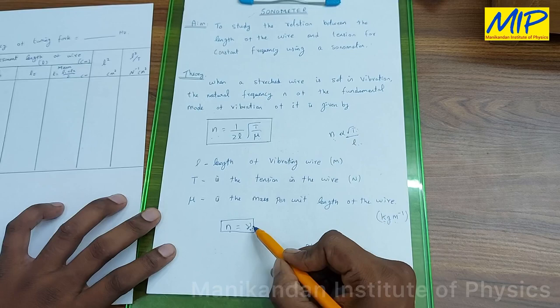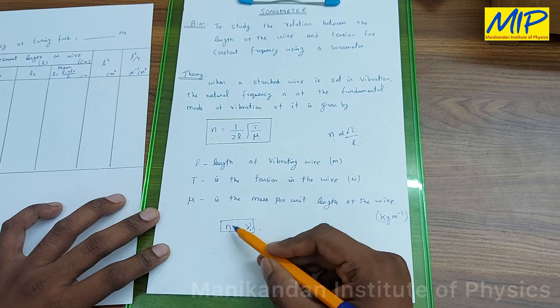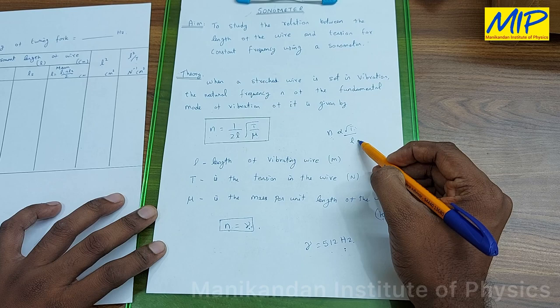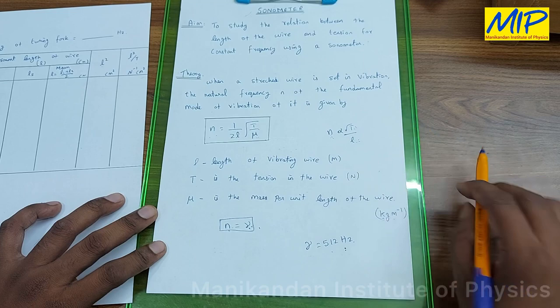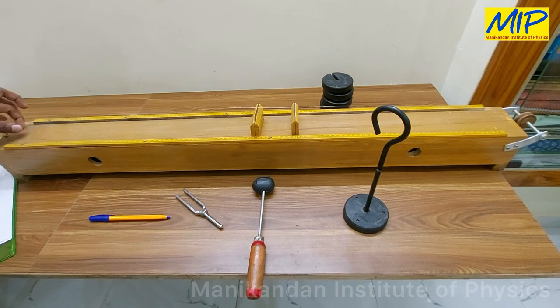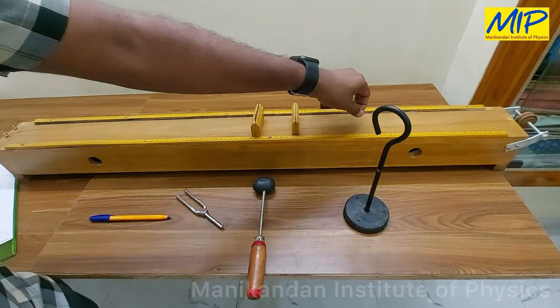For constant frequency ν, the sonometer frequency must match exactly to attain resonance. To vary the frequency value I am going to increase the tension. If I increase the tension, the resonant length of the wire also increases.